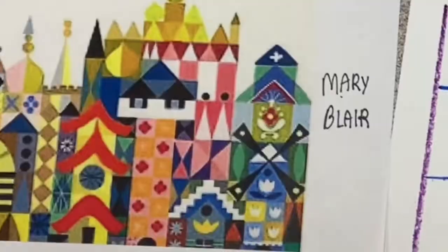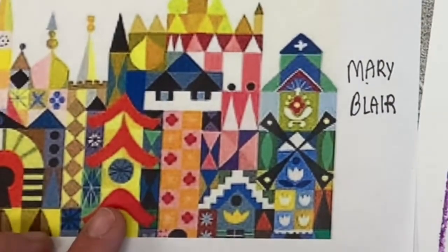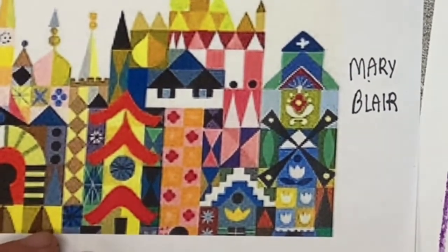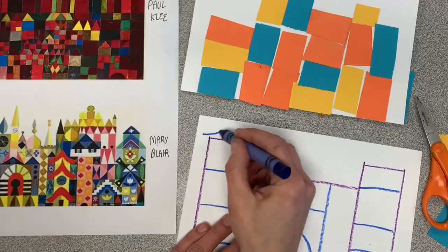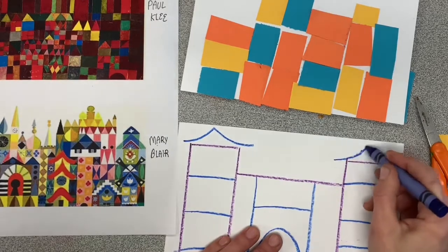Now, Mary Blair would add designs right on pretty much every single bit of her building. Notice there are these curvy lines that she uses to make roofs.